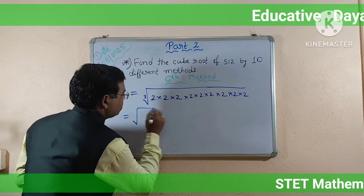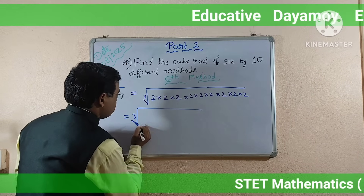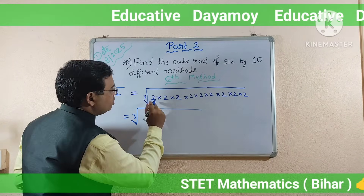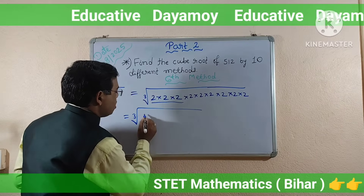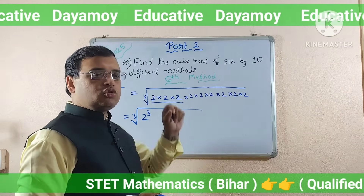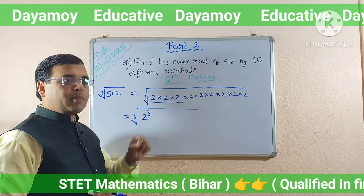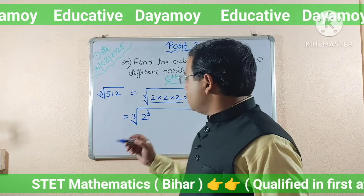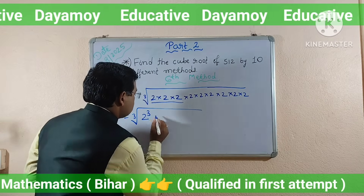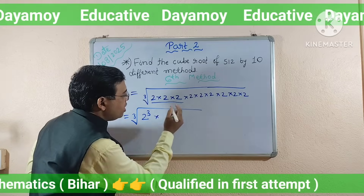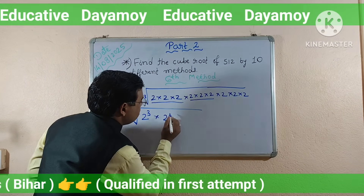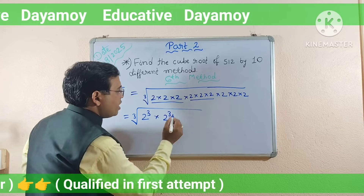Now you can easily write the cube root expression. There are three 2s, so I write 2 to the power 3. Then a multiplication symbol, and again 2 to the power 3, and again 2 to the power 3. You must know that 2 to the power 3 means 2 into 2 into 2. Now I write equals to cube root of 2 to the power 3, into 2 to the power 3, into 2 to the power 3.